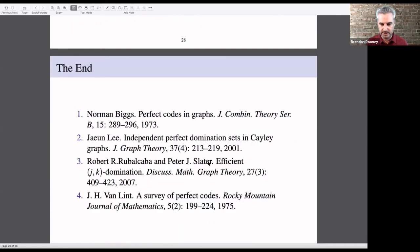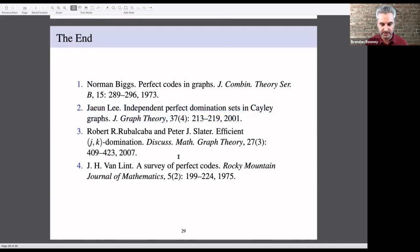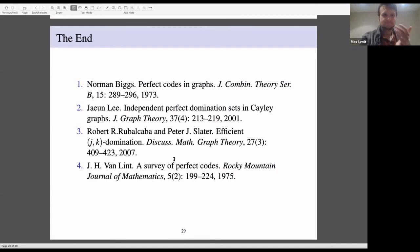Here are some papers to look at if you're interested: the Van Lint survey of perfect code theory; Biggs (1973) where the definition of a perfect E-code in a graph comes from; the beautiful paper of Lee (2001) connecting efficient dominating sets in Cayley graphs to covers of the complete graph; and the paper of Rubalcaba and Slater introducing the generalization of efficient JK-domination. That's it — thank you for bearing with me.